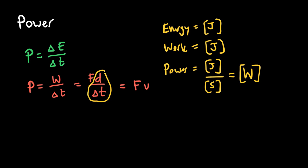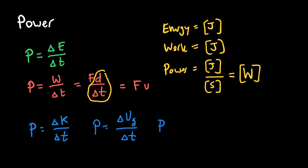It is common to find the power output of an object using a change in its energy. We can write things like a change in kinetic energy over a time interval, a change in gravitational potential energy over a time interval, or the work done by some force over a time interval. The quicker that energy is changed or work is done on an object, the higher the power. Power captures not just what's happening to the object, but how quickly it happens.